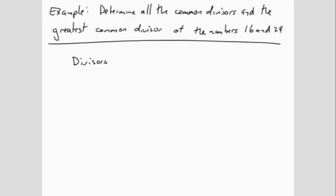The divisors of 16 are 1, 2, 4, 8, and 16. And the divisors of 24 are 1, 2, 3, 4, 6, 8, 12, and 24.